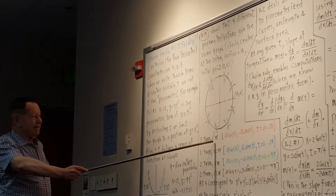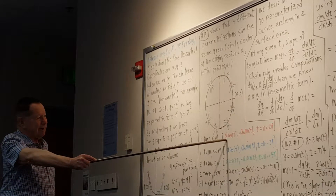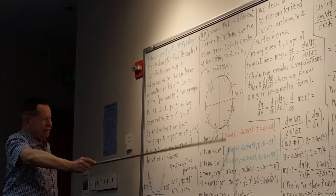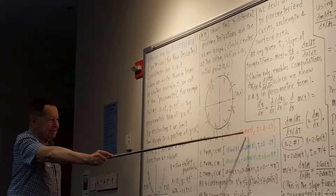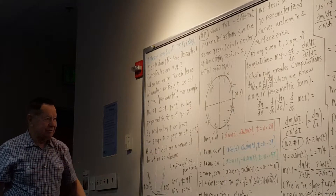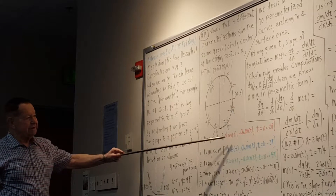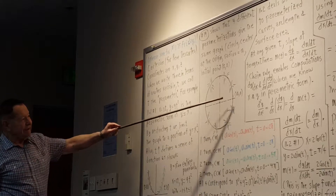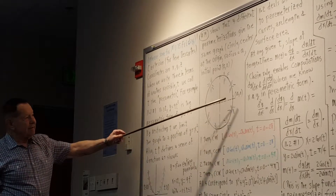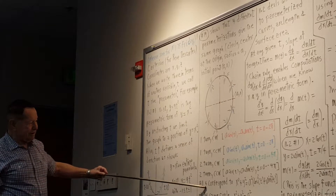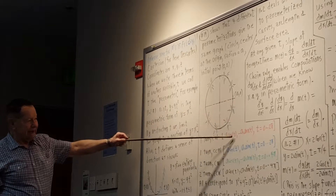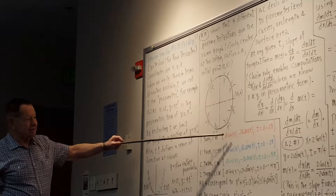One turn clockwise: a parameterization that will do that is x = A·cos(t) and y = −A·sin(t), where T is really like an angle from 0 to 2π in radians. You can check that this takes you around as indicated. In all four parameterizations, we're always starting out at T equals 0. Cosine of 0 is 1, so your x-coordinate is A.